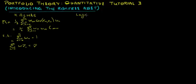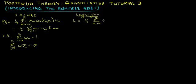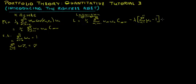We can solve this optimization problem using a Lagrangian. The Lagrangian L equals half of the portfolio variance — that is, the sum over m and n from 1 to k of Wm times Wn times the covariance between m and n — minus lambda times the first constraint (weights sum to 1), minus mu times the second constraint (weighted average return equals portfolio expected return).